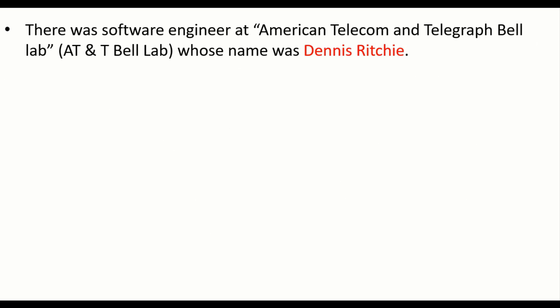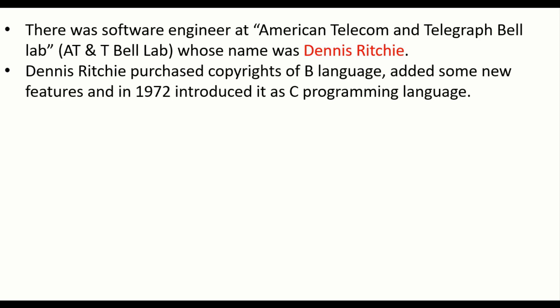Now there was a software engineer at American Telecom and Telegraph Bell Labs, nothing but AT&T Bell Labs, whose name was Dennis Ritchie. Dennis Ritchie purchased the copyrights of B language, added some new features, and in 1972 introduced it as C programming language.